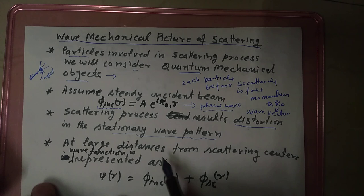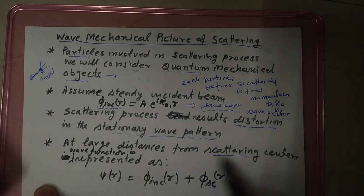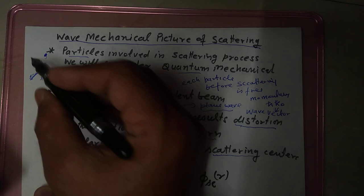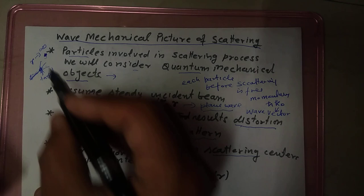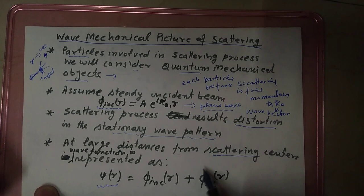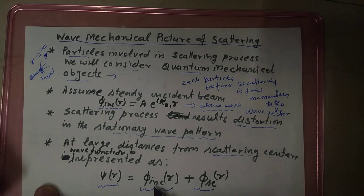What will happen at large distance from the scattering center? When R is at infinity — as R goes to infinity — how can I represent that distorted wave function? So that distorted wave function at large R.